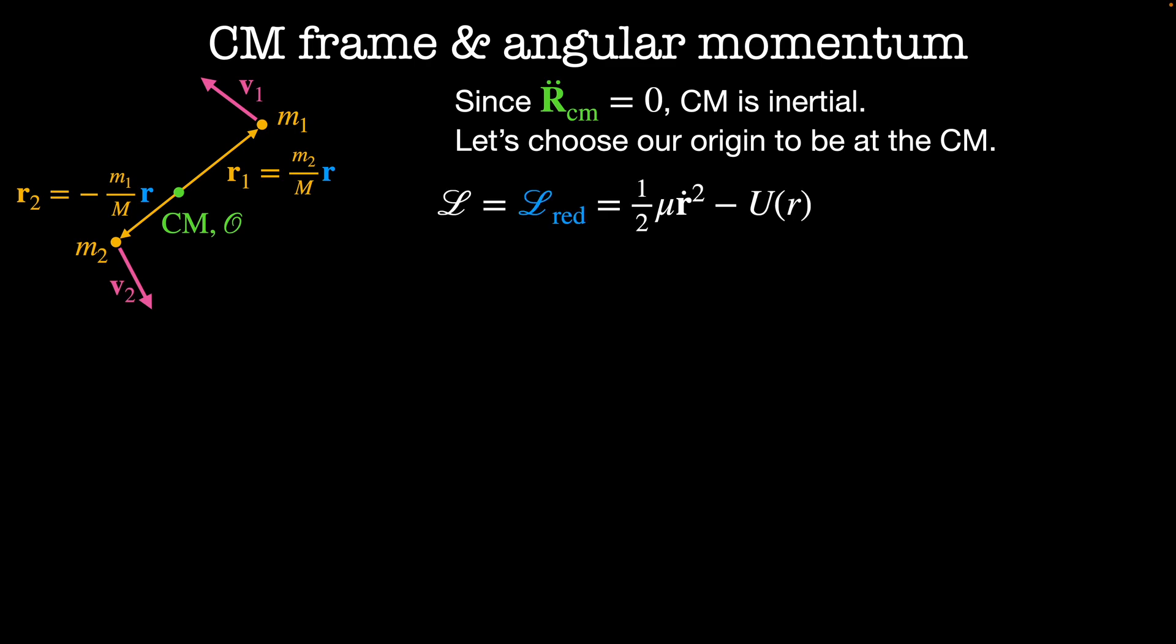Then in this coordinate system, the Lagrangian is merely the reduced Lagrangian which equals 1/2 μ r dot squared minus the potential energy as a function of r. In this type of system, symmetry dictates that all the motion must be planar.